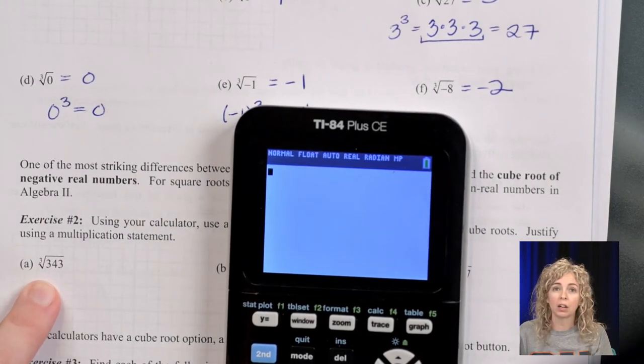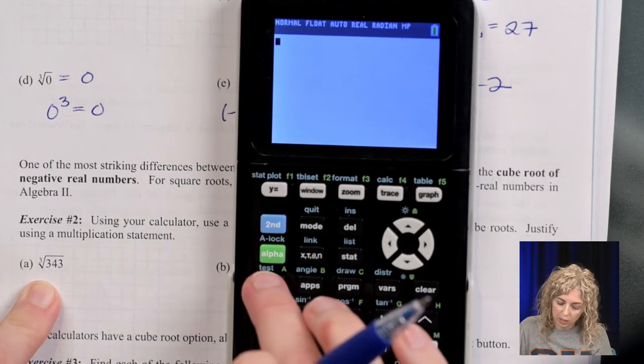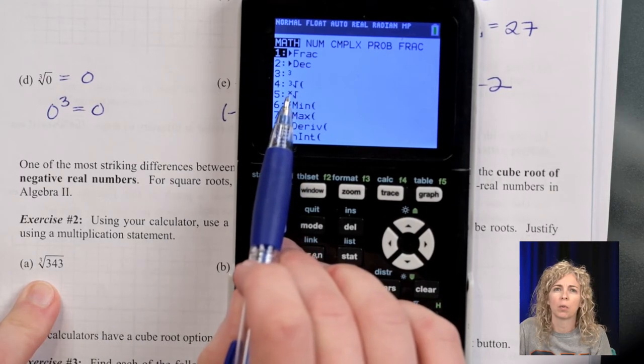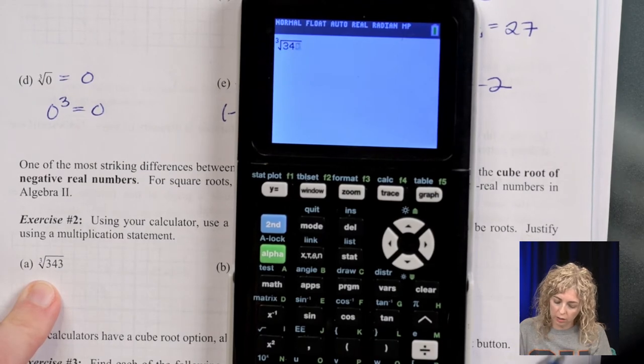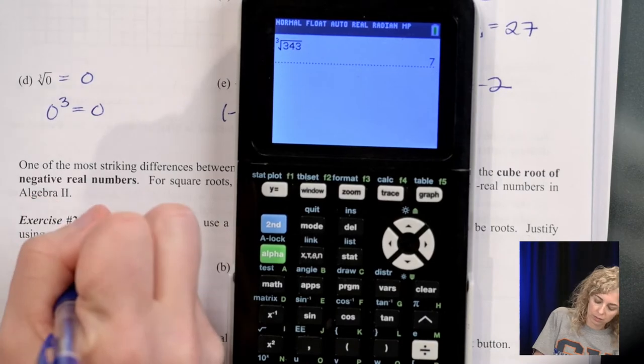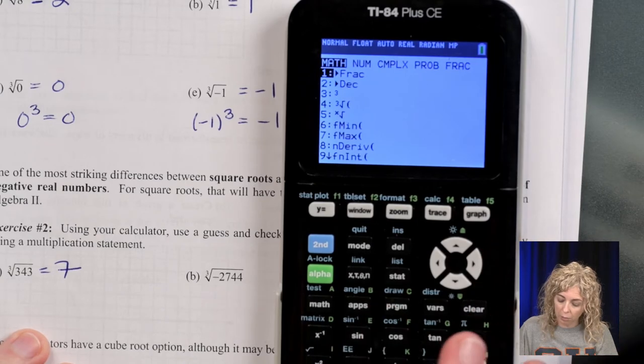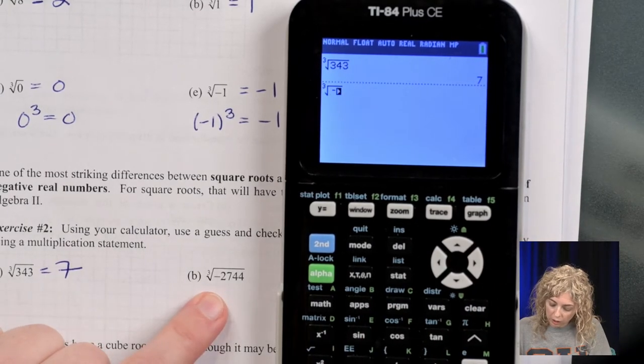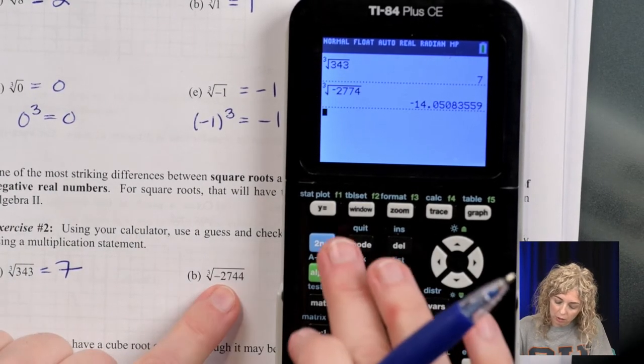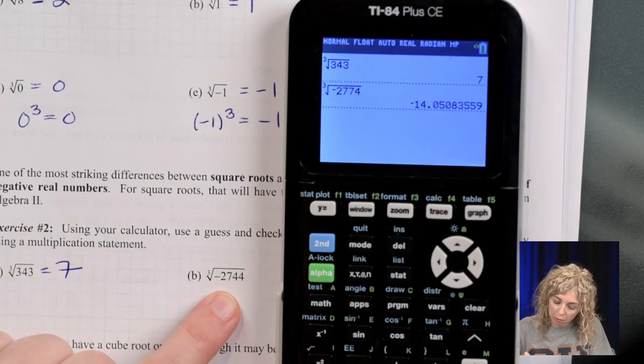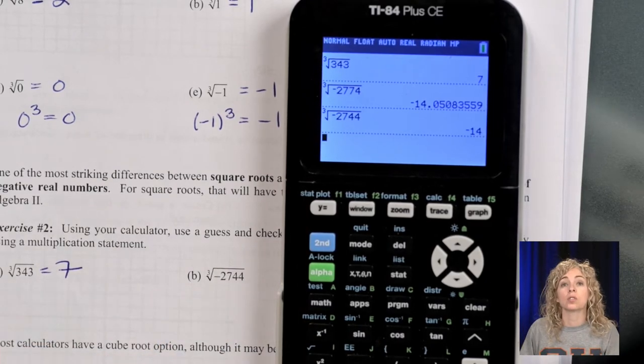So the cube root button. Square root is right here above the x squared. To go to the cube root, we need to go to math, and you can see it's button number 4, the cube root. So we take the cube root of 343, and we get 7. Slide it over, the cube root, so we go to math, number 4. The cube root of negative 2744. Oh, I typed it in wrong. I was going to say, it should come out a whole number.